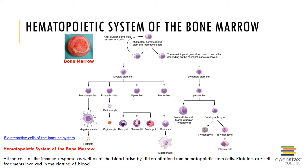Here you can see the cells of the immune system and how they differentiate from hematopoietic stem cells. We will go over the different types of cells of the immune system throughout this chapter. Remember, in adults, erythropoiesis is normally confined to red bone marrow, but lymphocyte production, called lymphopoiesis, involves the red bone marrow, thymus, and peripheral lymphoid tissues. This leads to the development of all of the cells present in our immune response.